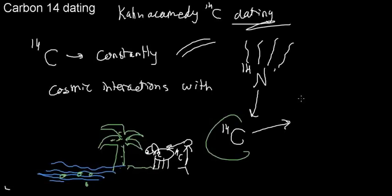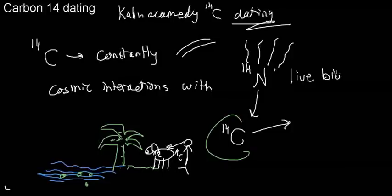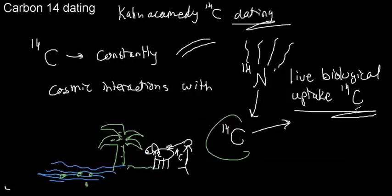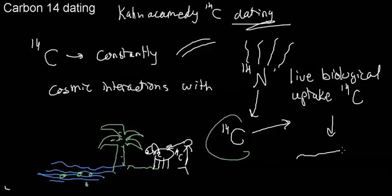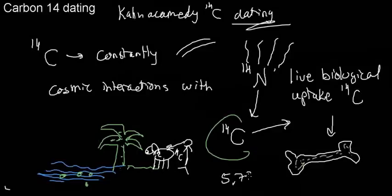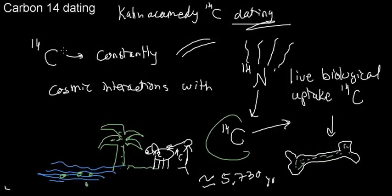What's important to understand is that live biological systems — only while they're alive — uptake carbon-14 regularly. When dead, they don't feed or interact with their environment. So as long as they're alive there's a steady supply of carbon-14. When a biological sample dies, like this bone, it stops taking up carbon-14. I can measure how much carbon-14 remains, and using the half-life of carbon-14 — which is roughly 5,730 years — I can solve for how old the bone is. This is carbon-14 dating, and it is an example of using radioactive isotopes for research.